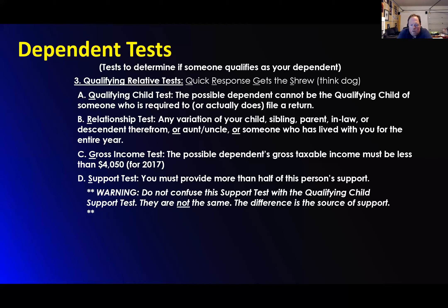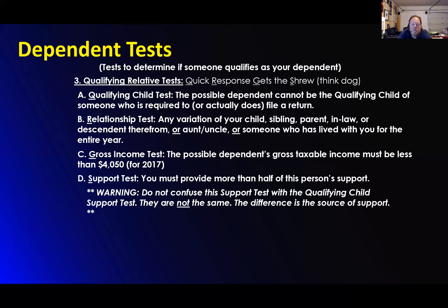The last part is, or someone who has lived with you for the entire year. Their gross income test: they can't have more than $4,050. If it equals $4,050 or more, they cannot qualify as a qualifying relative. They cannot have income more than $4,050 — this is for 2017 and we'll update it for 2018. Then the support test: you must provide more than half of this person's support.